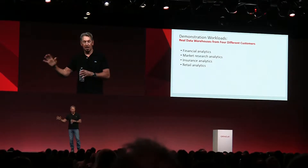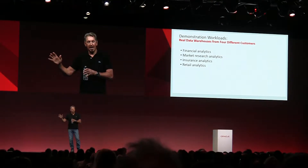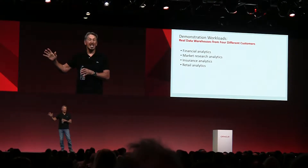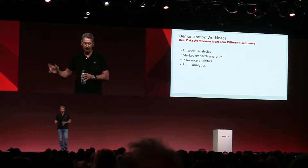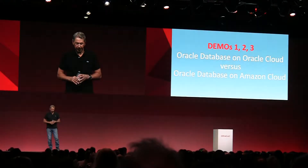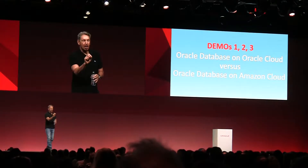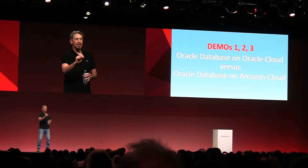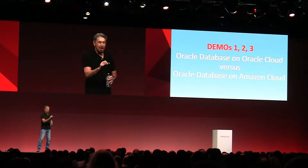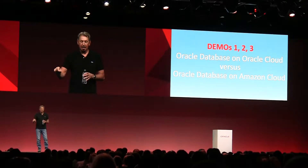We could have made this look even more ridiculous if we had gone biased. Next slide. Okay, first three demos: the autonomous database running on the Oracle cloud versus the Oracle database running on the Amazon cloud.